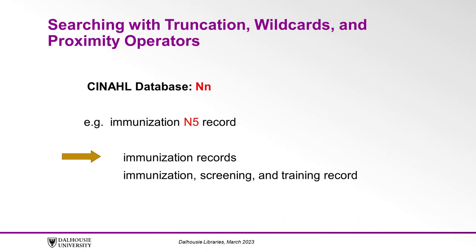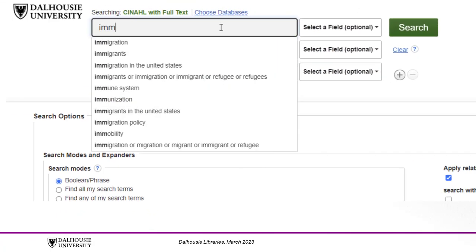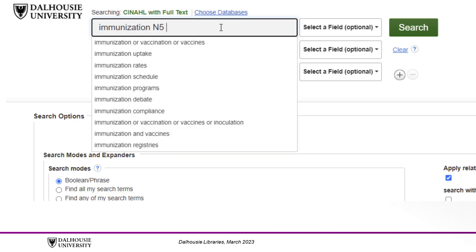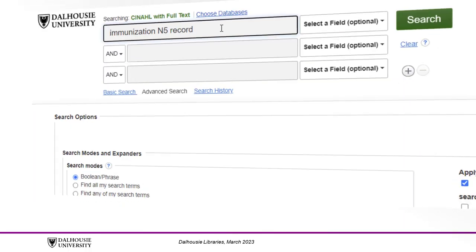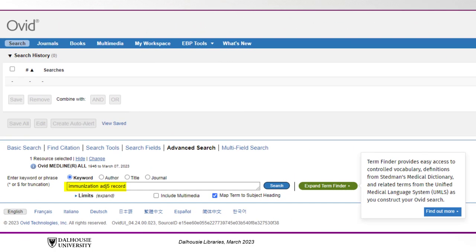Repeating our search in CINAHL, our proximity operator will be a capital N followed by a number. Therefore, our search in CINAHL will be 'immunization N5 record' to retrieve results that mention both keywords within five words of each other. Within Ovid Medline, the proximity operator is a lowercase ADJ followed by a number. Therefore, our Ovid Medline search will include 'immunization ADJ5 record'.